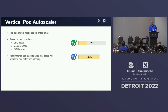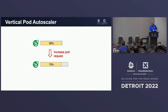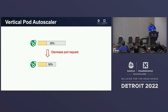VPA recommends the pod — actually its container — sizes to keep the real usage within the requested capacity. So if a pod is using something like 95% of its current request, and maybe even occasionally going above 100%, VPA will increase the pod/container size. If the situation is opposite, it will decrease the pod size.